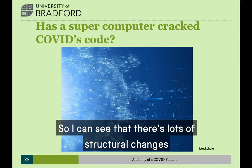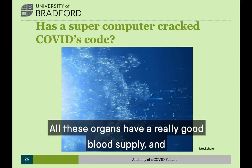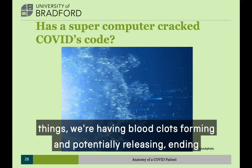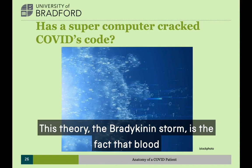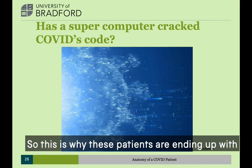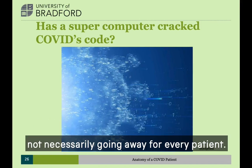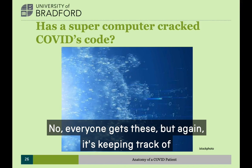There are lots of structural changes within the body because of this virus, and we think there's logic as to why — the blood connecting all these organs, organs with really good blood supplies, hypertension exacerbating things, blood clots forming and ending up in places they shouldn't be, and blood vessels getting super leaky due to the bradykinin storm. This is why patients are ending up with so many problems that aren't necessarily going away. I don't want to scare you — not everyone gets these. But it's important to keep track of the people who do, and we don't yet have figures on everyone who has ongoing problems.